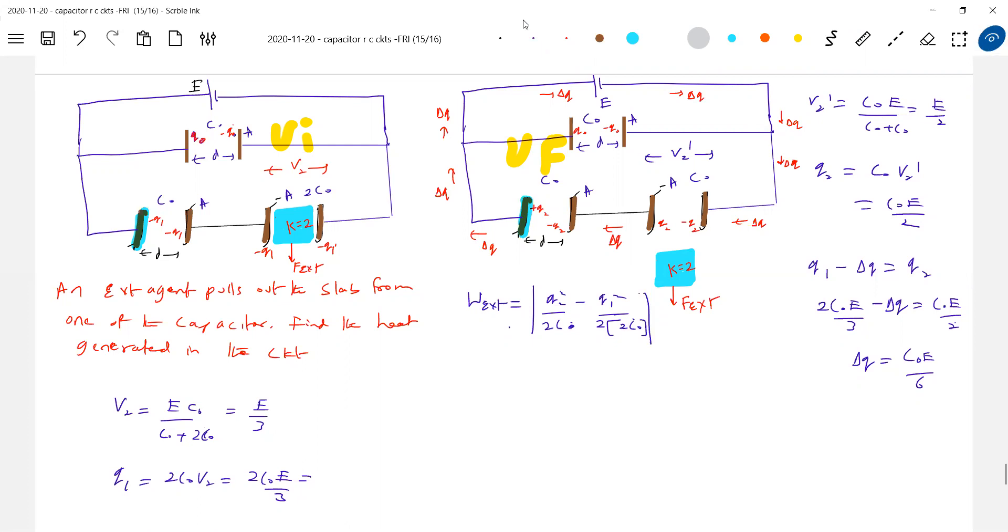Try to look at this, this is something very important. The external agent will pull out the slab from this capacitor. So here the electrostatic plates will exert a force, we have to do work against it. It will pull out gradually, then work by external agent equals change in potential of that capacitor. Substitute this, so we know Q2, Q1. Why this 2C0? After when you take out slab, the capacitance will decrease by K times, so it was 2C0, so now C0.